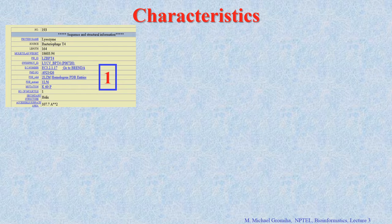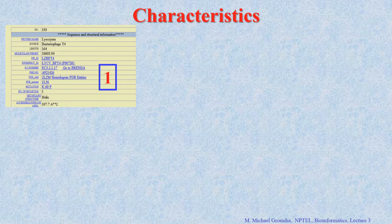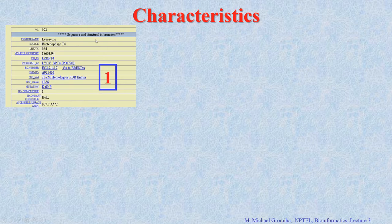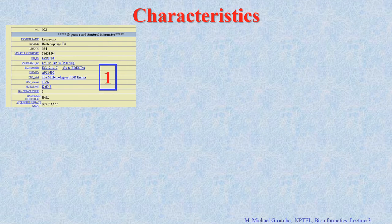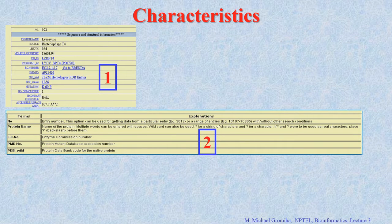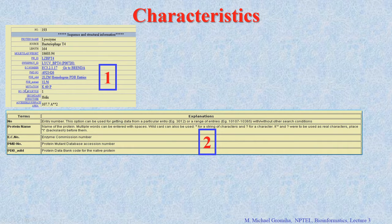This is a database called the thermodynamic database for proteins and mutants that we developed a few years ago. First we give the contents — we give details about the contents including sequence and structure information. If you go to the website you get all the details: thermodynamic data, experimental conditions, literature, and so on. The second aspect is ontology — the terms and conditions. For all the terms we use, we need to give the details.